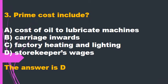Question 3. Prime cost includes: A. Cost of oil to lubricate machines. B. Carriage inwards. C. Factory heating and lighting. D. Storekeepers' wages. The answer is D.